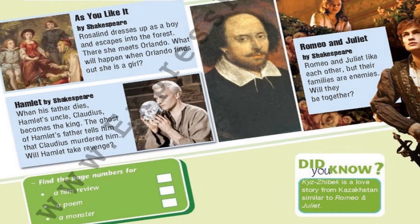As You Like It by Shakespeare: Rosalind dresses up as a boy and escapes into the forest. There she meets Orlando. What will happen when Orlando finds out she is a girl? Hamlet by Shakespeare: when his father dies, Hamlet's uncle Claudius becomes the king. The ghost of Hamlet's father tells him that Claudius murdered him. Will Hamlet take revenge? Romeo and Juliet by Shakespeare: Romeo and Juliet like each other, but their families are enemies. Will they be together?